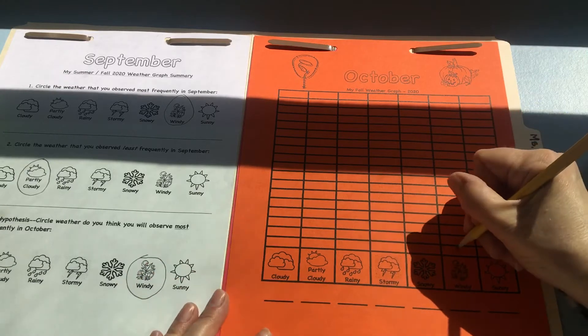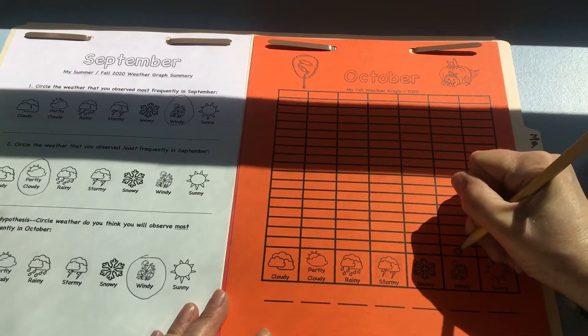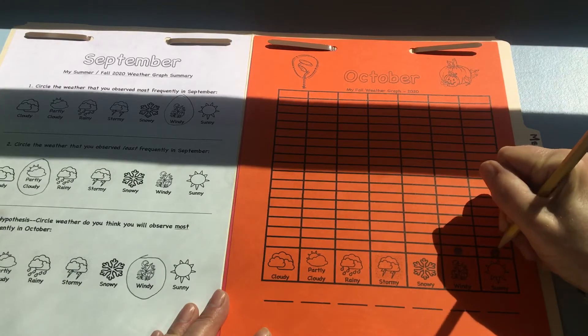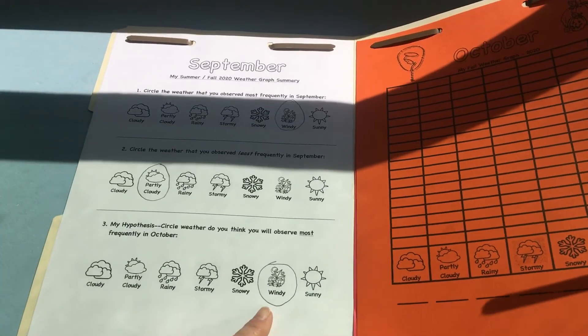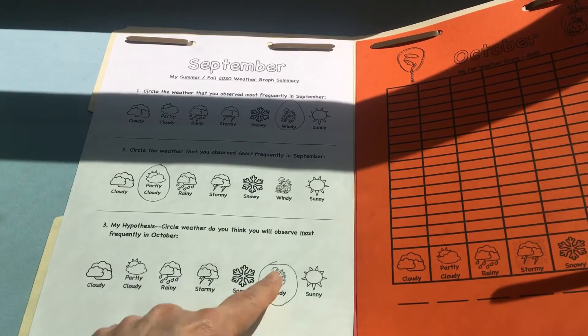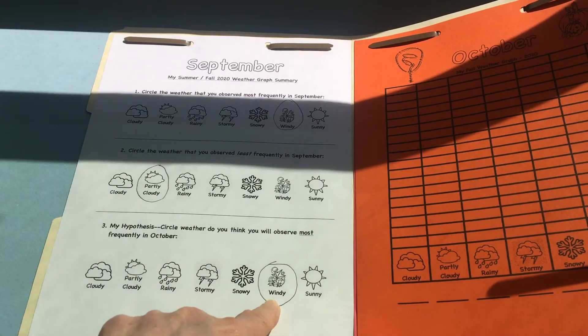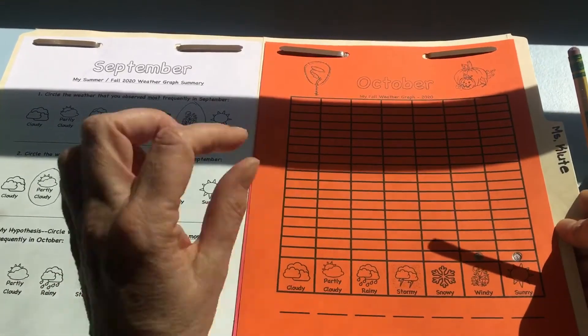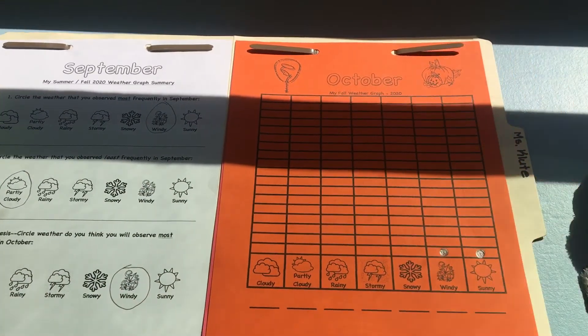So I put one dot on windy, one dot on sunny. And if I look at what I predicted right here, I predicted that I would have the most in October of windy. So I can look at that and see if my prediction as I fill this in is going to match that.